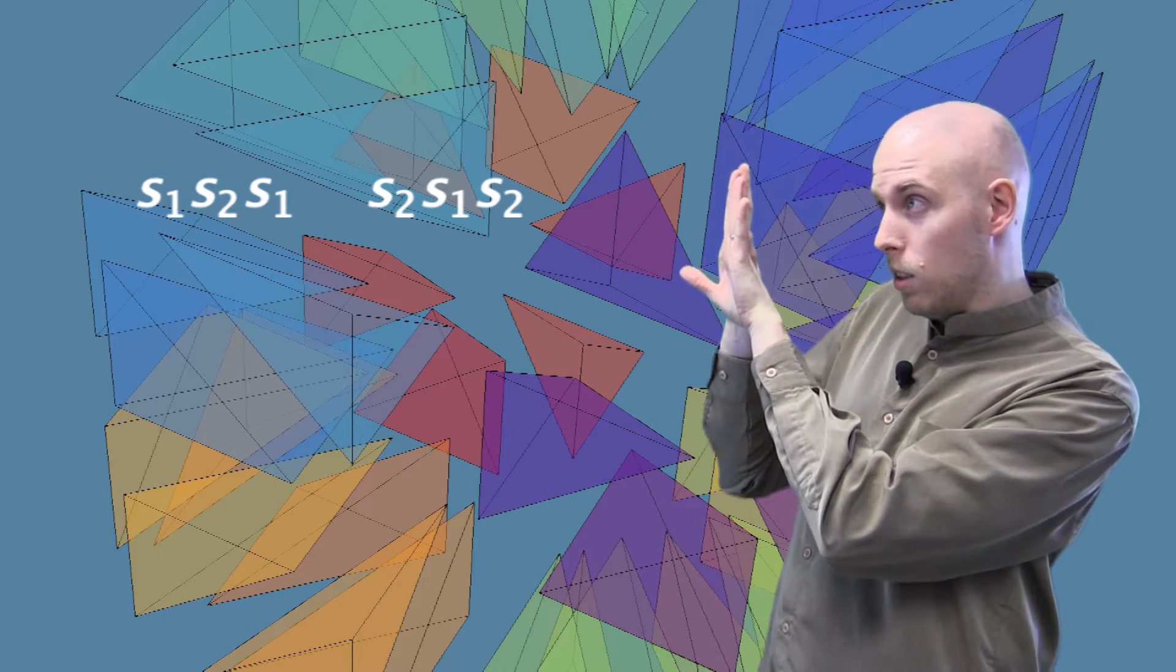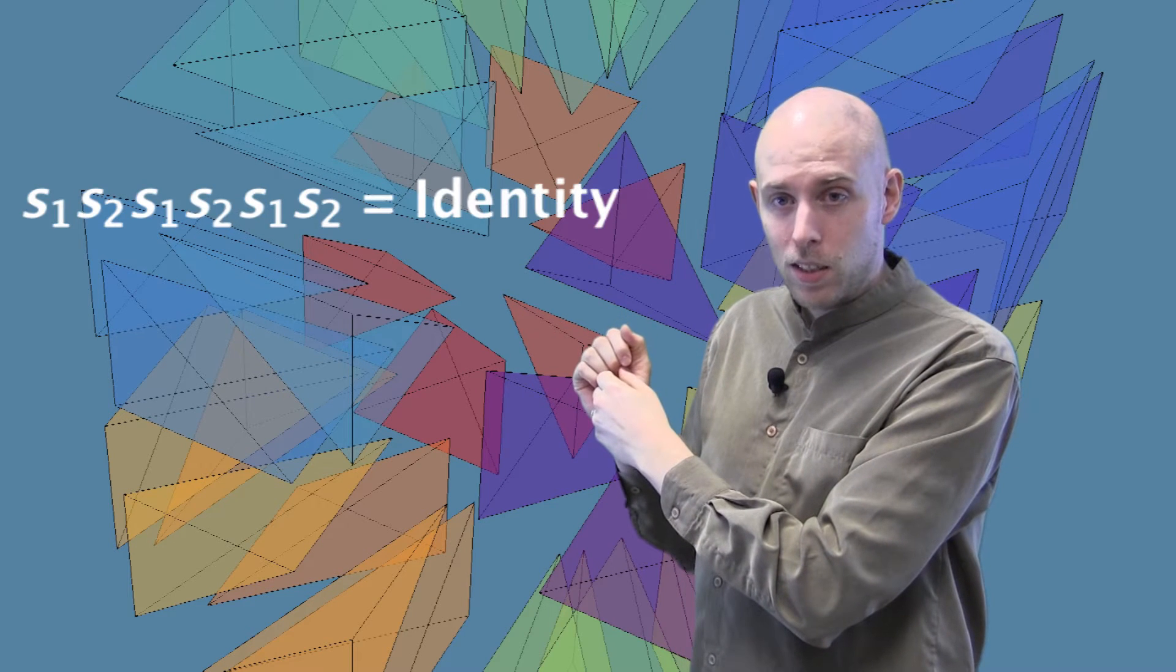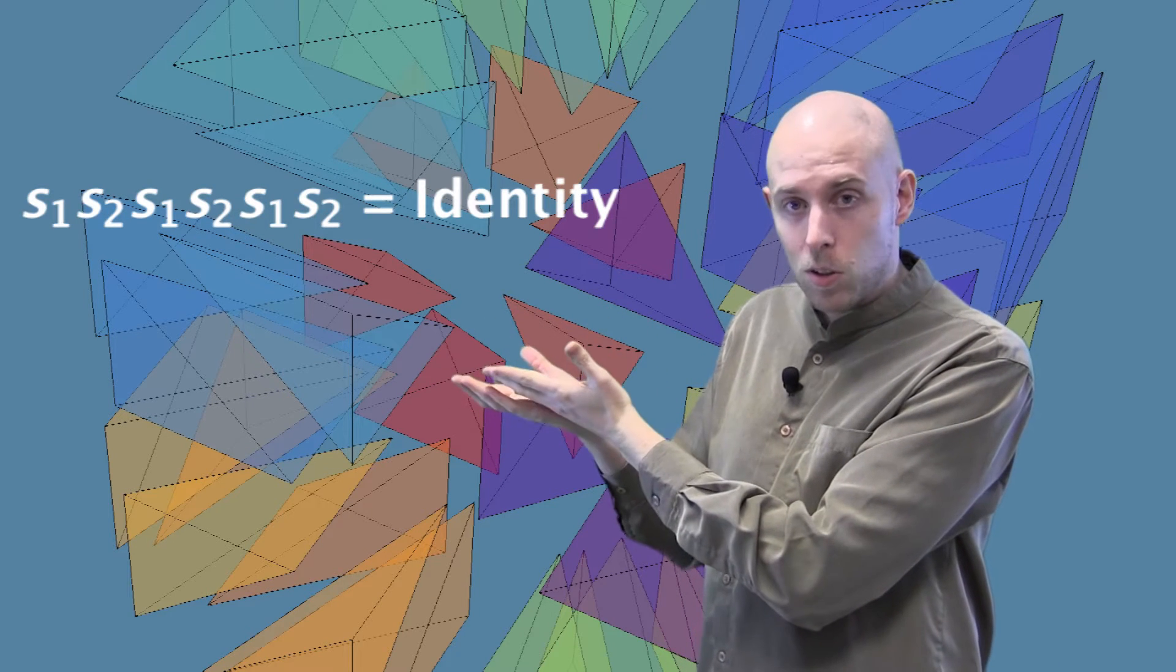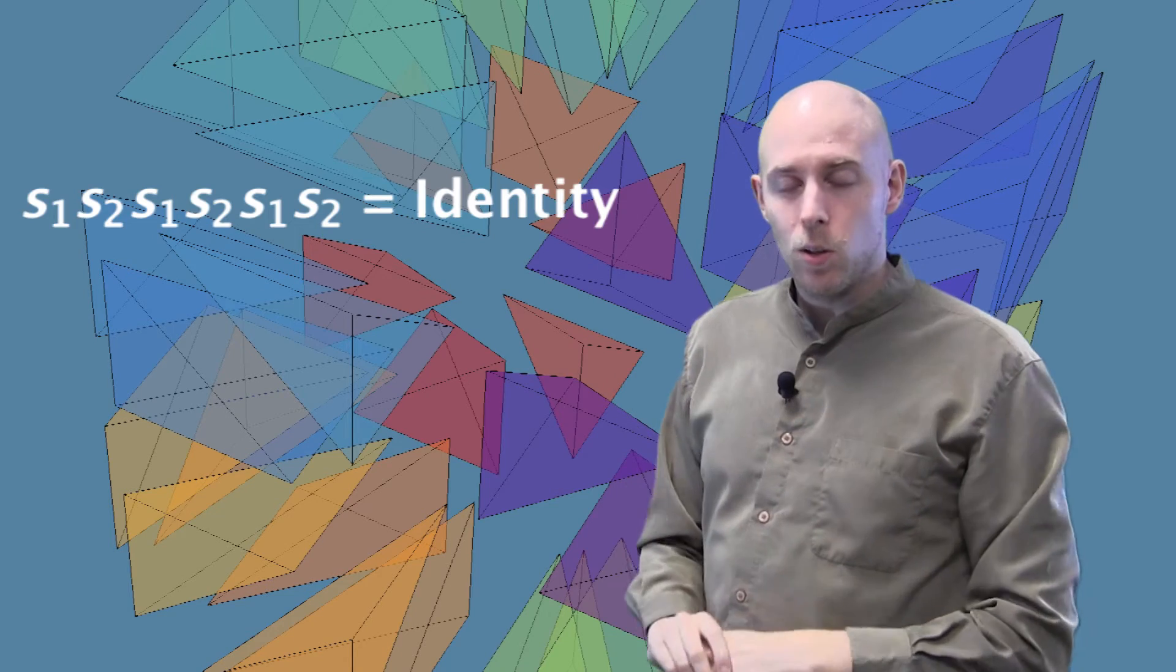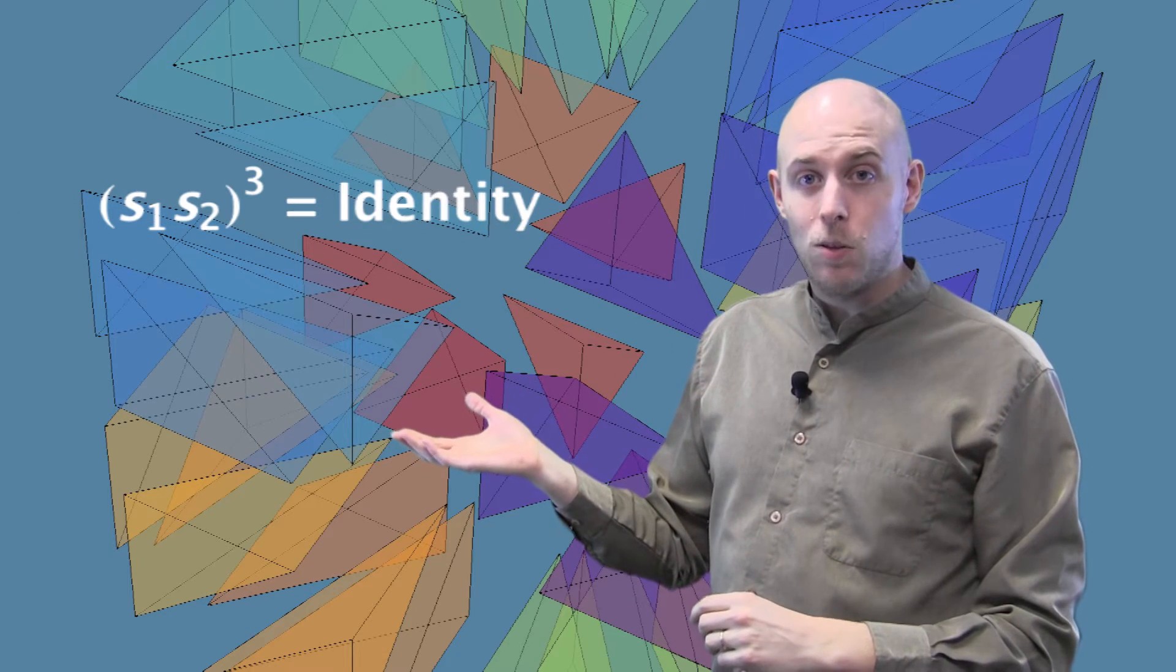Now, another way to write S1, S2, S1 equals S2, S1, S2 is S1, S2 to the third power is equal to the identity. Or, in other words, (S1, S2)³ is equal to the identity. So it's natural to understand reflection groups like this.